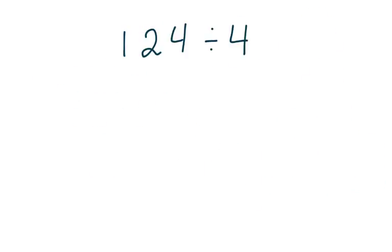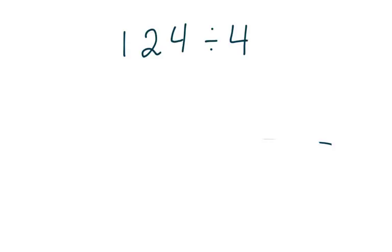Here's your next problem: 124 divided by 4. Even though this problem is a little bit larger, we can follow the same steps to solve it. Go ahead and give this one a try. If I'm using my area model, I would draw my rectangle and start thinking about my facts. If I'm using the distributive property, I would think about my whole number of 124 and whether there's a fact I know that can get me pretty close, or whether I should take smaller leaps at this problem.